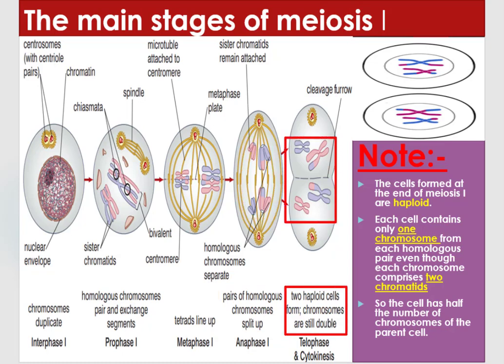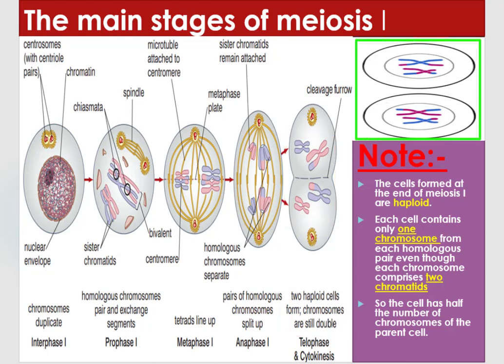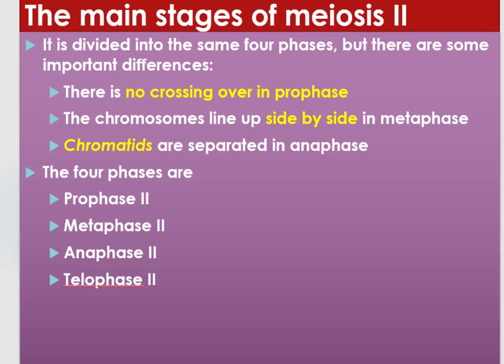During telophase 1 and cytokinesis 1, chromosomes of homologous pairs and cytoplasmic contents of parental cells get separated and produce two haploid cells. The two daughter cells formed at the end of meiosis 1 are haploid — each cell contains only one chromosome from each homologous pair, even though each chromosome comprises two chromatids. So the cell has half the number of chromosomes of the parent cell, which is why meiotic cell division is called reduction division.